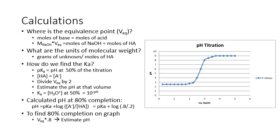You'll also calculate the pH at 80% completion. Because we're at 80% completion, we're in the buffer region and can use the Henderson-Hasselbalch equation. At 80% completion, 80% is in the basic form and 20% is in the acidic form. Once you find your pKa, add the log of 0.8 divided by 0.2 to get your pH at 80% completion.